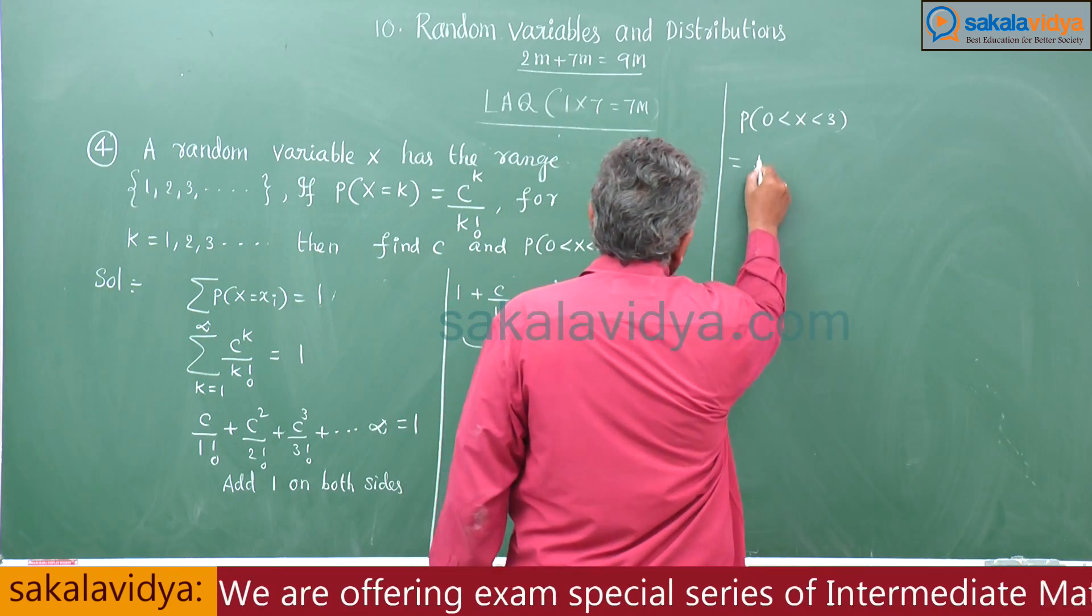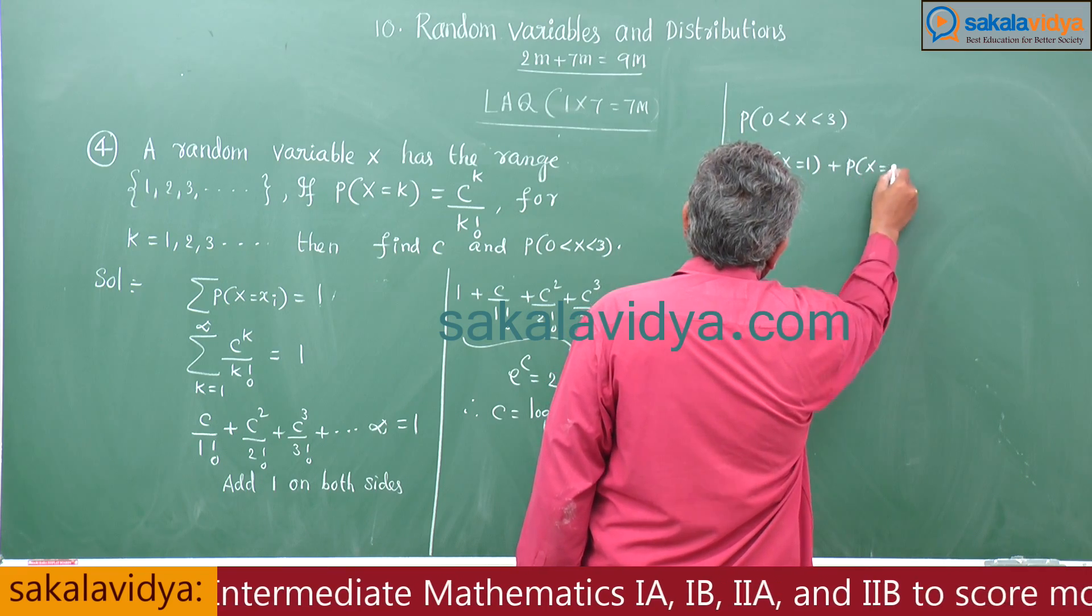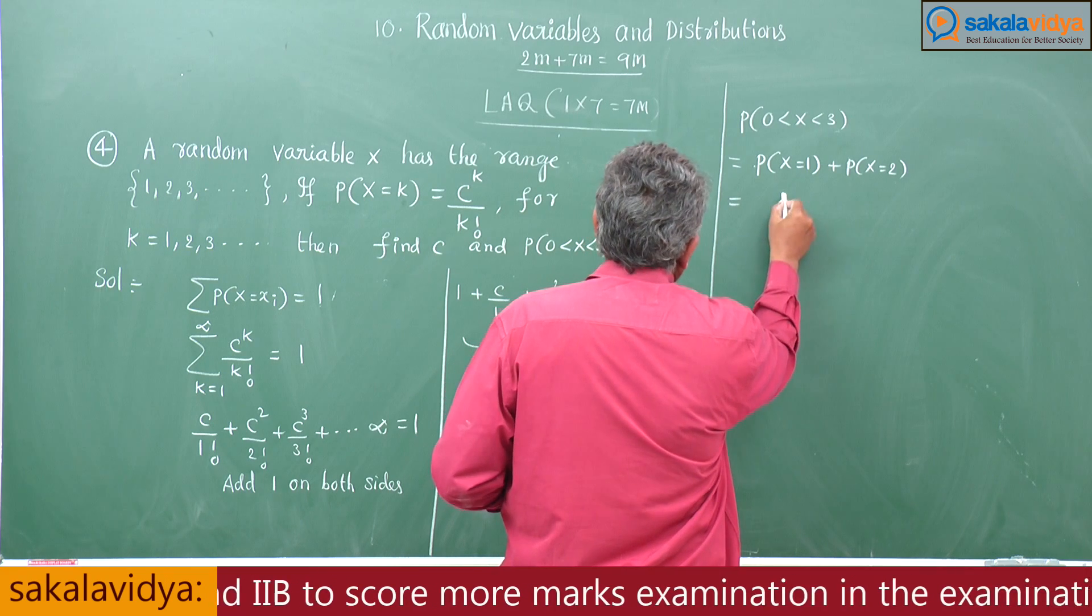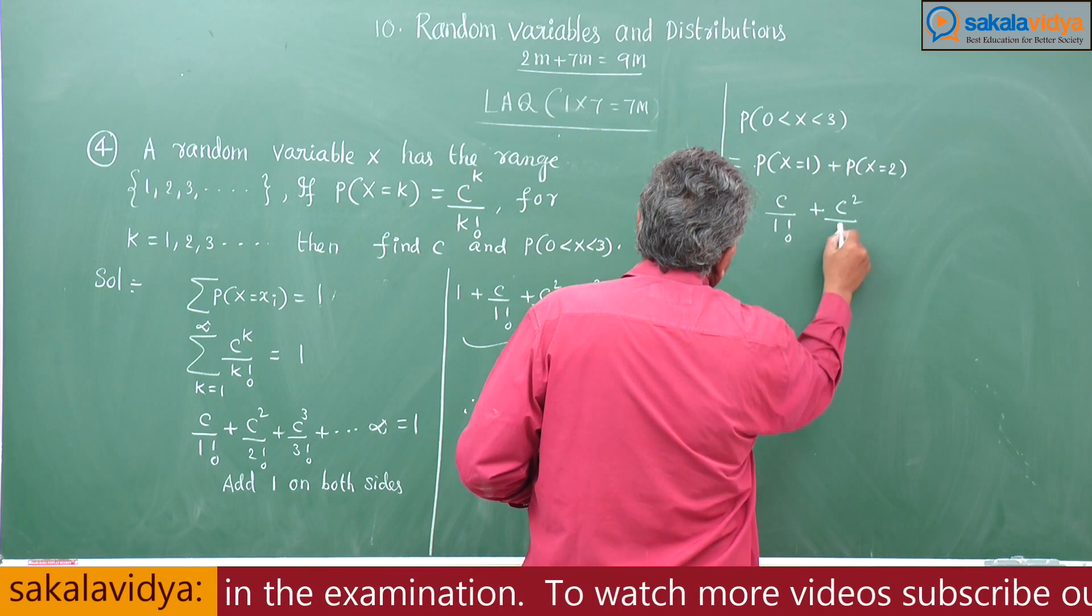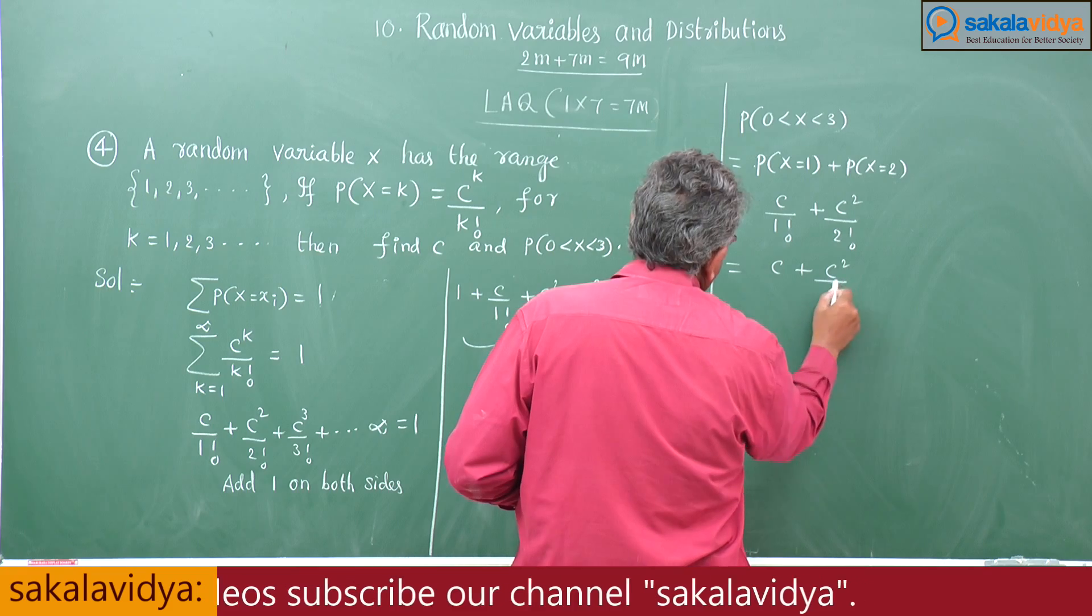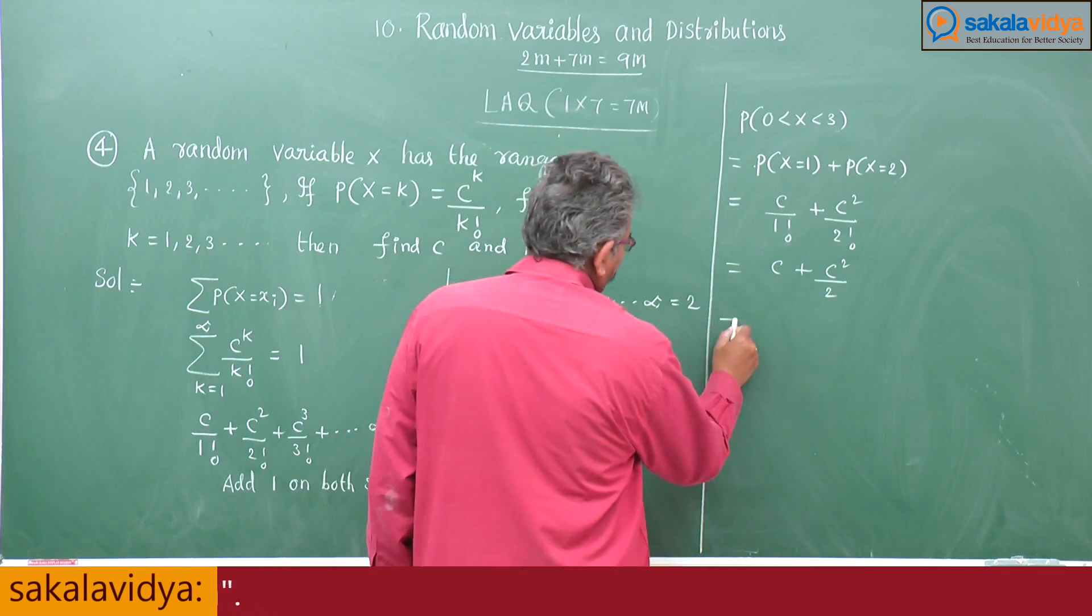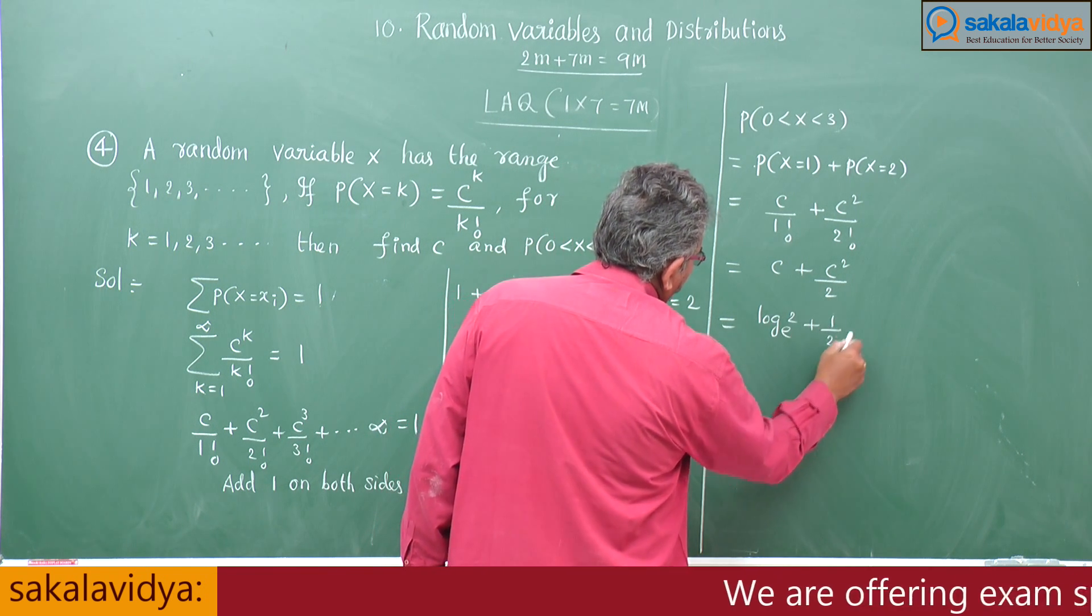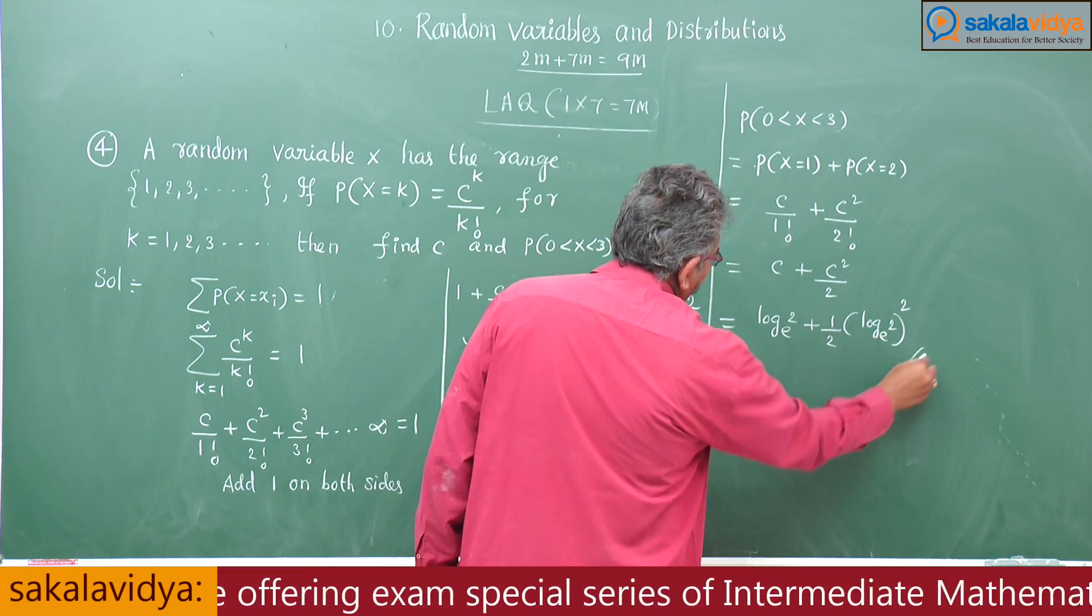That means p of x is equal to 1 plus p of x is equal to 2. This is c power 1 by 1 factorial plus c square by 2 factorial. That means c plus c square by 2. We know c is equal to log 2 base e. So this is equal to log 2 base e plus half into log 2 base e whole square. This is the answer.